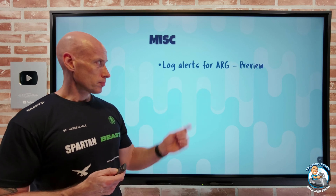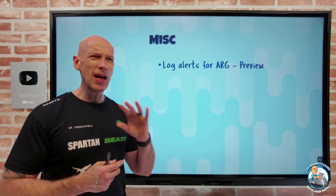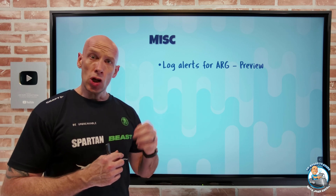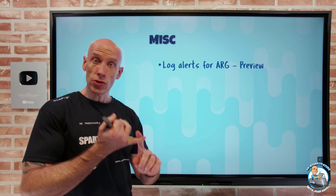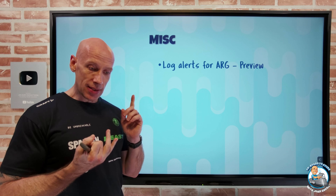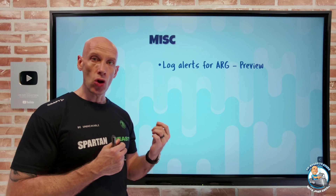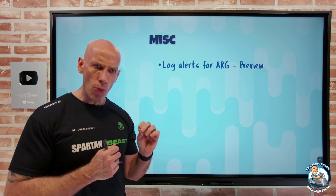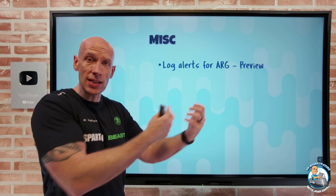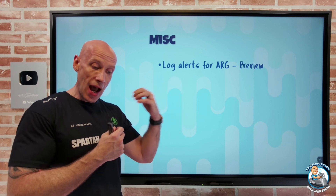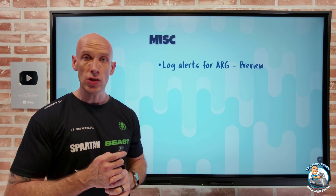Log alerts for Azure Resource Graph are now available in preview. We're used to creating alert rules on data in a Log Analytics workspace, then they added Azure Data Explorer as a source. Now I can also trigger based on Azure Resource Graph — that very performant set of ways to interact with ARM control plane metadata — and I can even join that with other tables. So now I can create log alerts including Azure Resource Graph information.